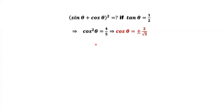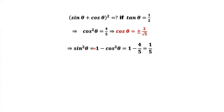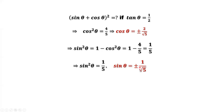Take the square root on both sides: cosine theta equals positive or negative two over square root of five. Now use the first identity — sine theta squared plus cosine theta squared equals one — so sine theta squared equals one minus cosine theta squared. Cosine theta squared equals four over five, so one minus four over five equals one over five. Taking the square root on both sides: sine theta equals plus or minus one over square root of five.